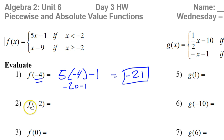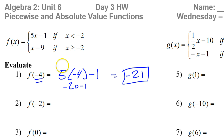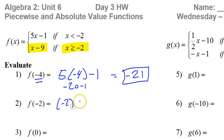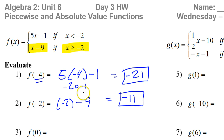What about if x is negative 2? Is negative 2 less than negative 2? No, a number can't be less than itself. Is negative 2 greater than or equal to negative 2? Yes, because of the 'or equal to' part. So we're going to be using the bottom function: x minus 9. That means we'll be doing negative 2 minus 9, which is negative 11. That's the answer to number 2.